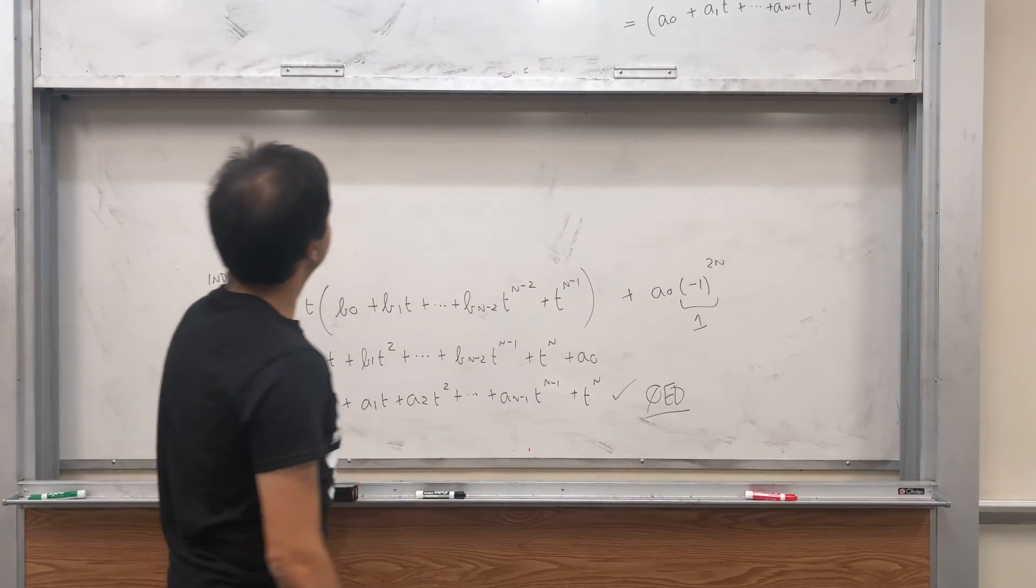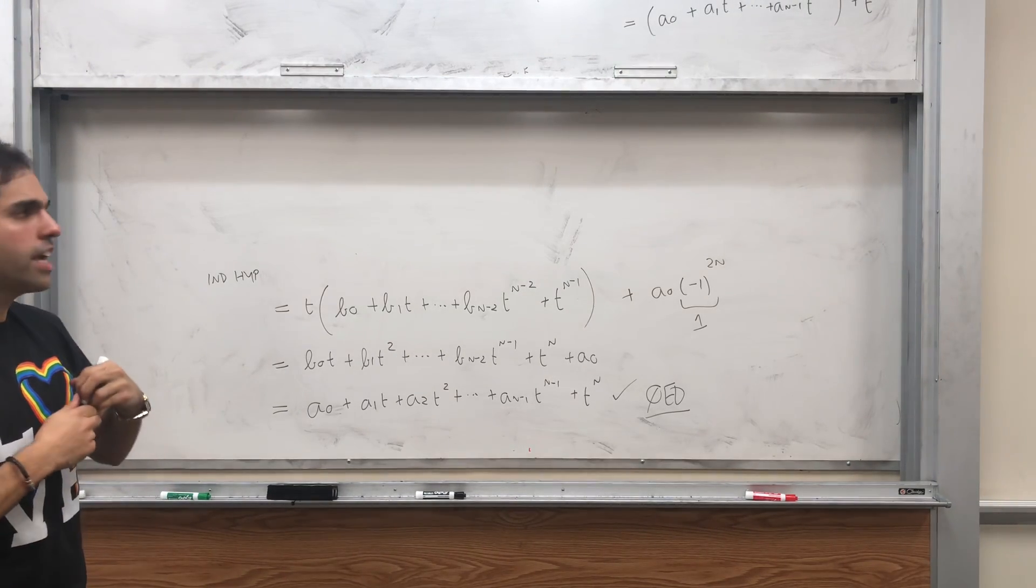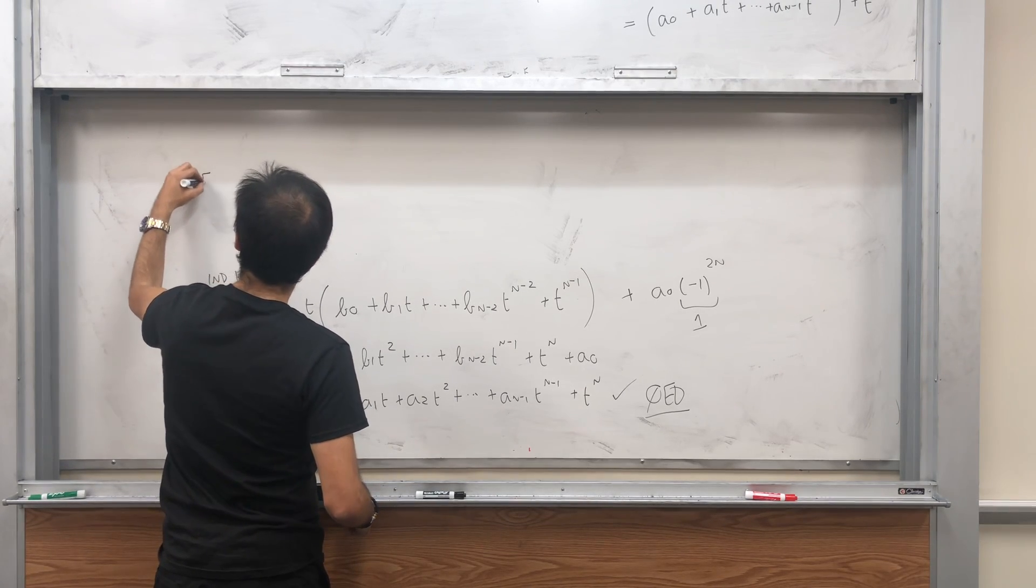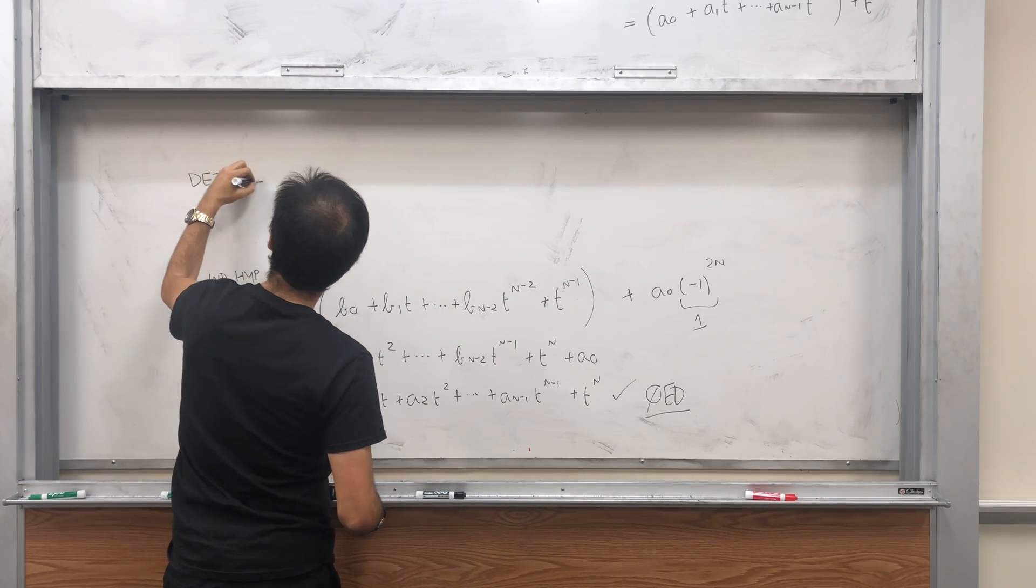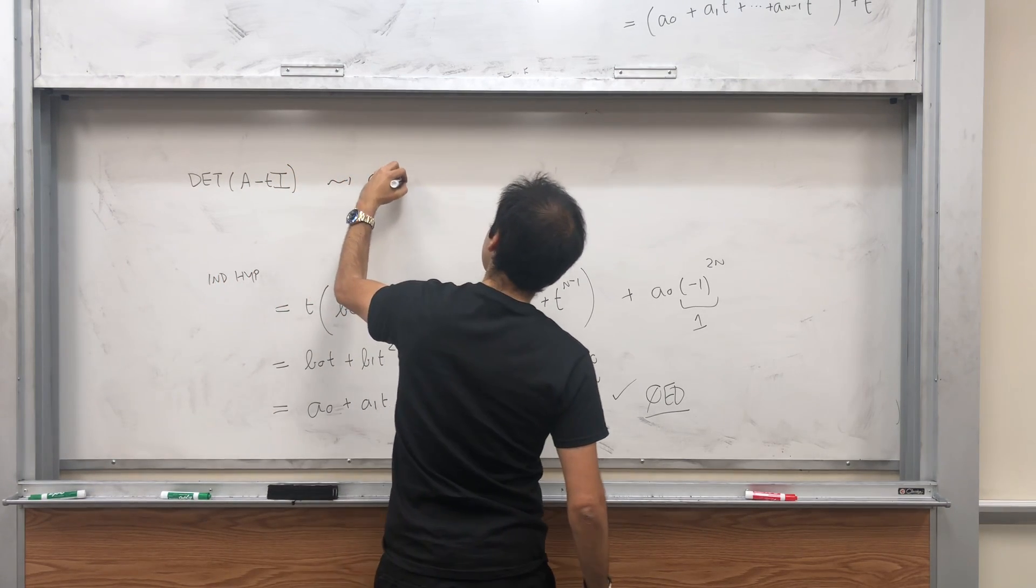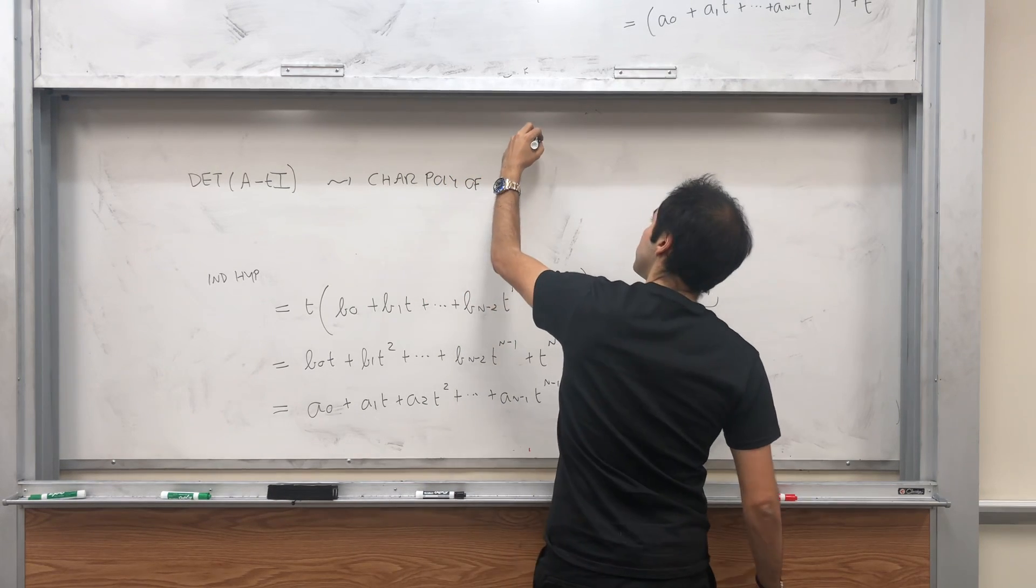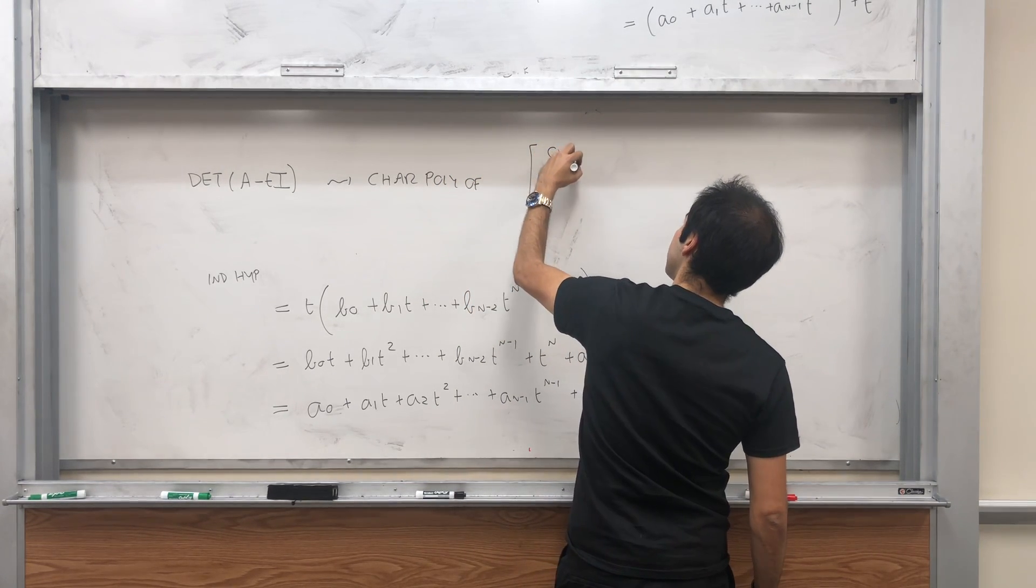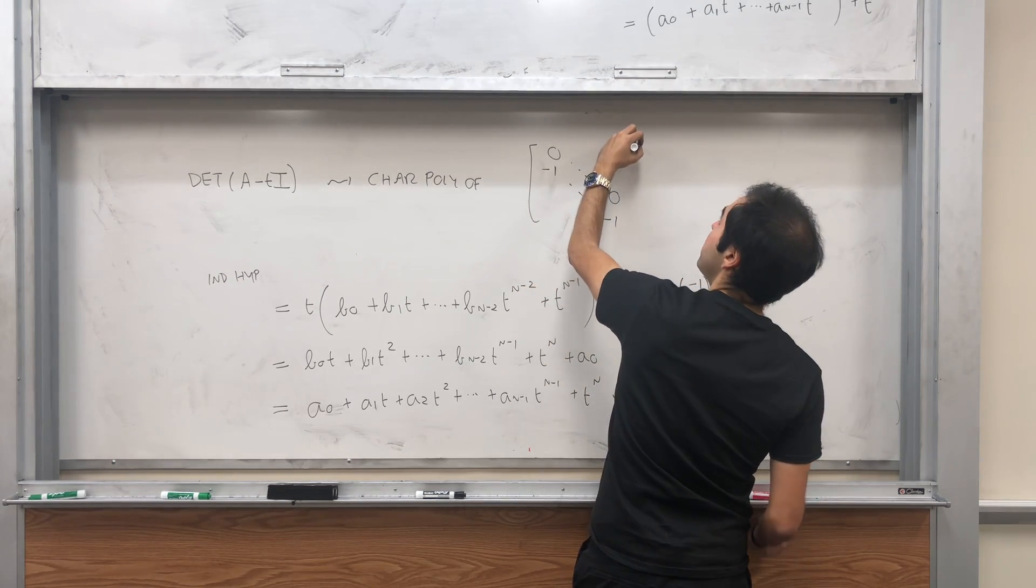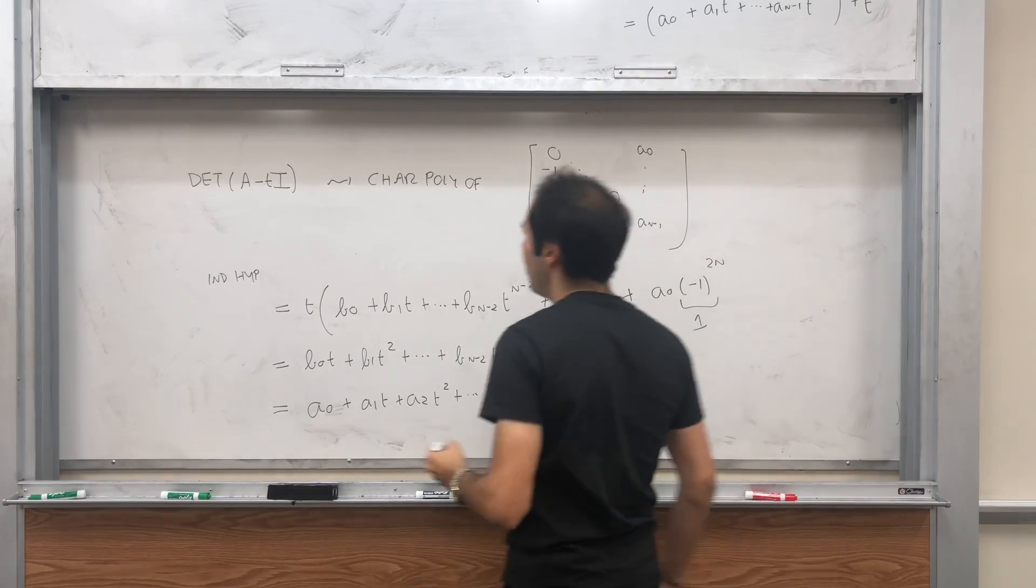Now the question is, why did I write the determinant of A plus TI? Because it relates to what's called the characteristic polynomial. So what if we want determinant of A minus TI, which is if you want the characteristic polynomial of just a matrix: bunch of zeros, minus 1, and A_0 up to A_{n-1}?